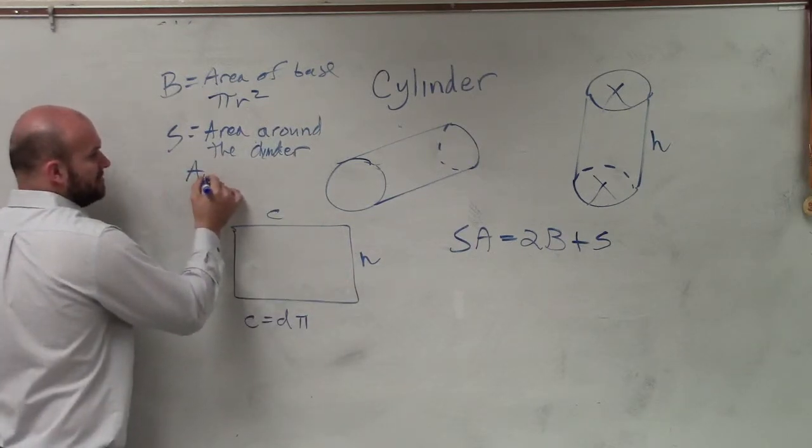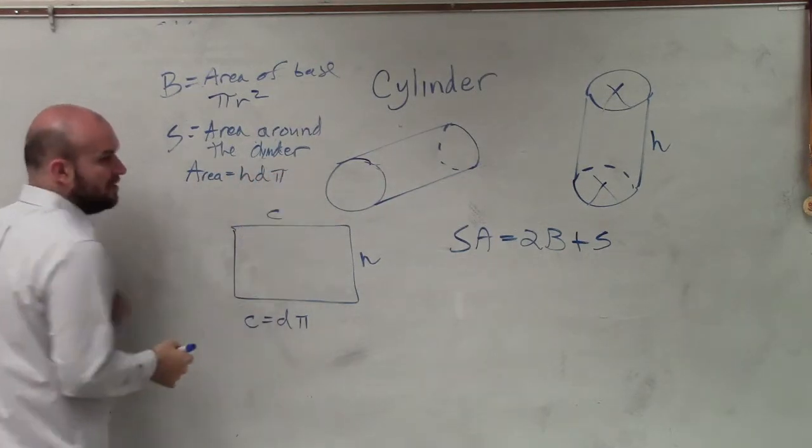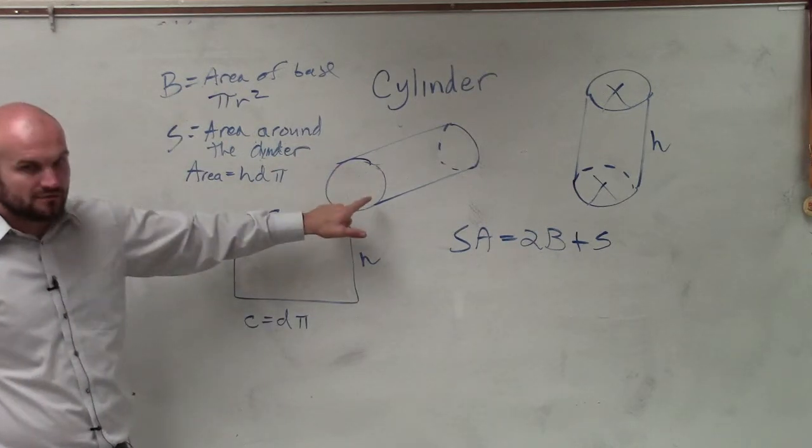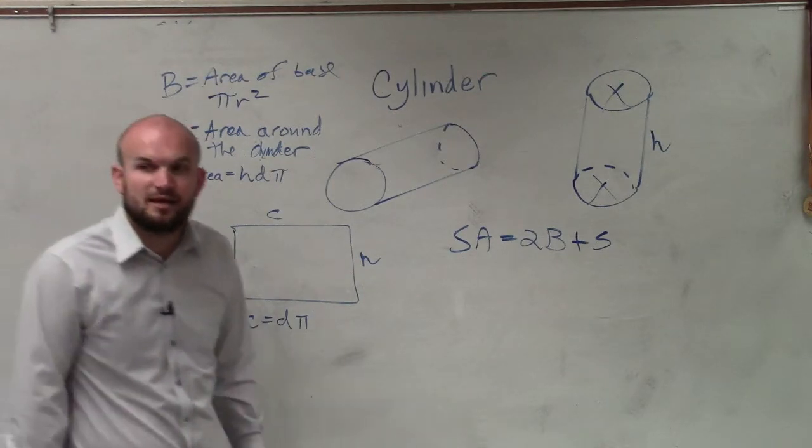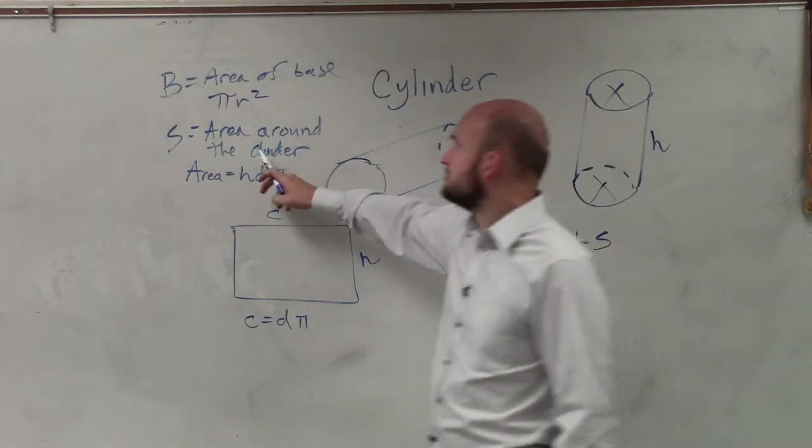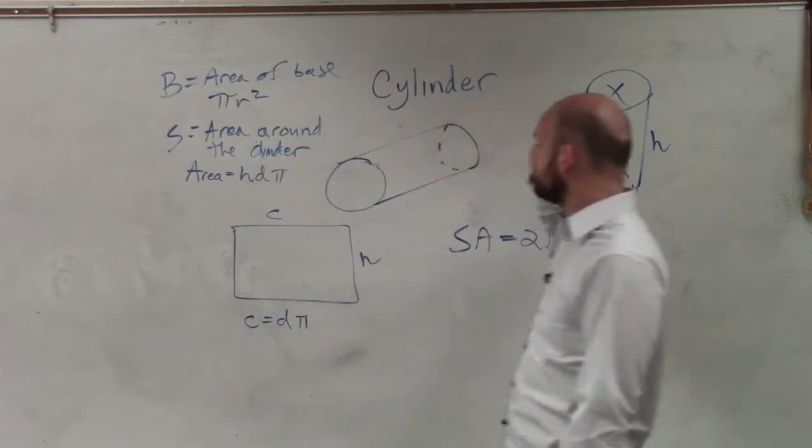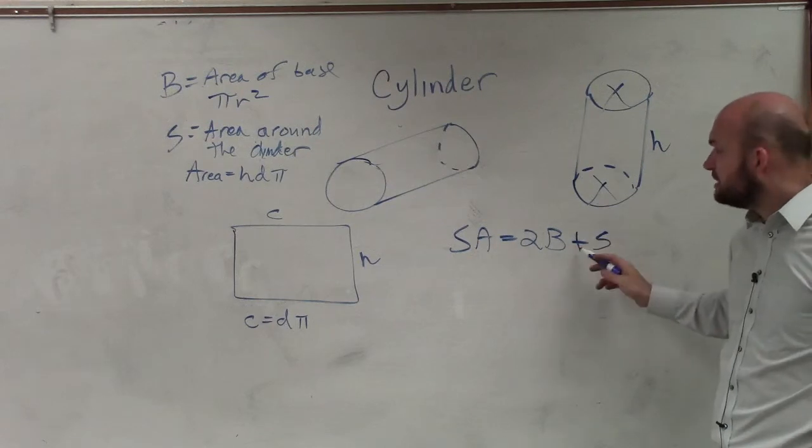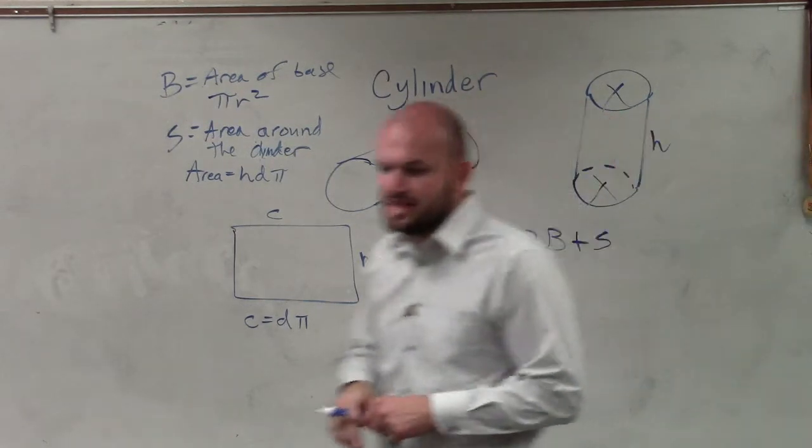So area is going to equal height times diameter times pi. Where h represents the height, which you'll know. D represents the diameter of your circle. And pi is obviously there for pi. What is the area of base? Pi r squared. Area of base, pi r squared. So it's going to be two times the base, plus the area around the cylinder. And I'll give you guys an example here in just a second.